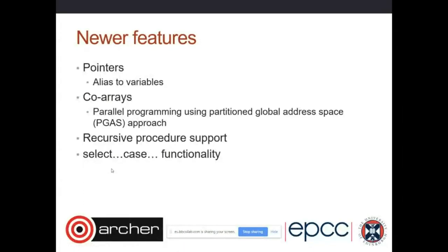Other newer features include co-arrays for parallelism — introduced across the 2003, 2008, and 2018 standards — pointers to variables, recursive procedure support, and `select case` functionality. That covers the majority of new functionality in Fortran 90, 95, 2003, and beyond.